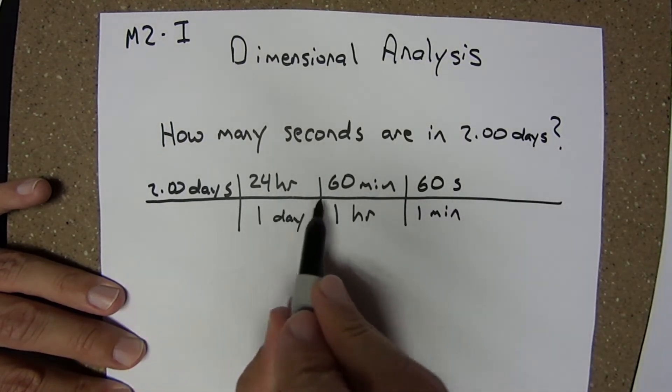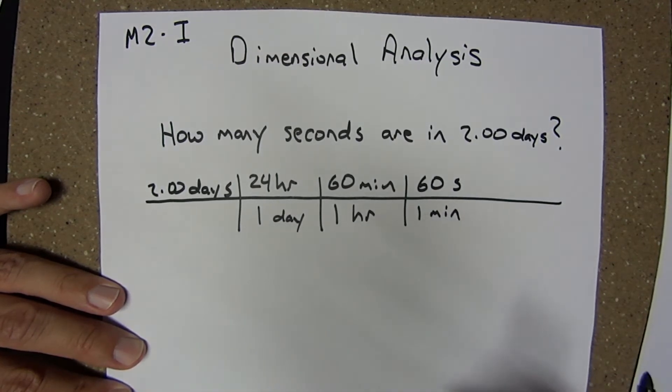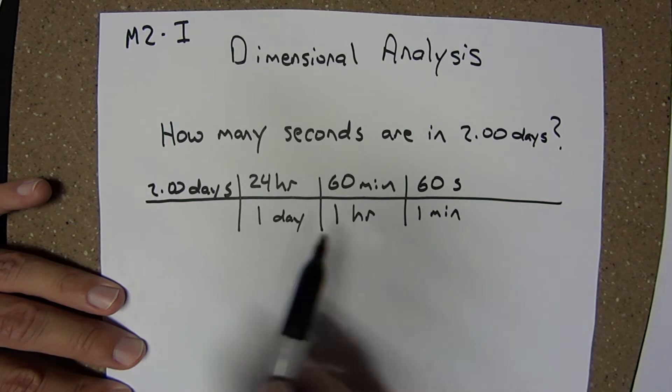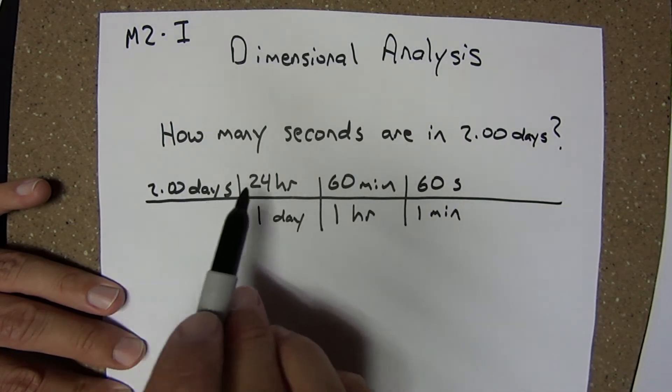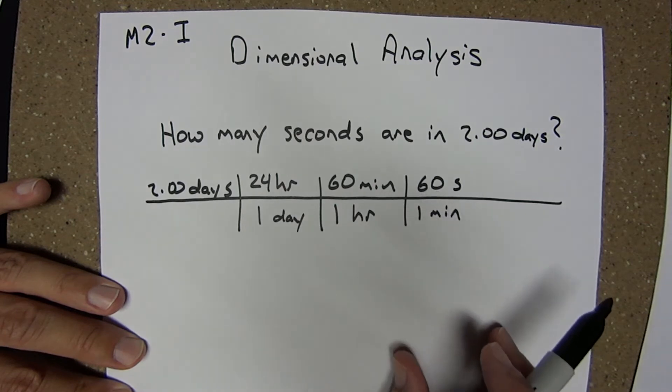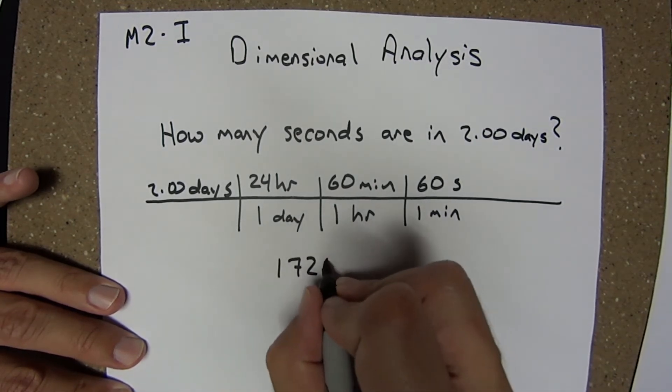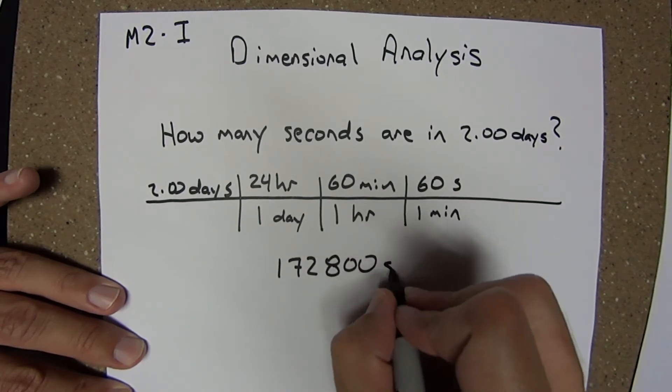Anything that is above this horizontal line, I'm going to multiply by. Anything below, I'm going to divide by. So here I'm taking 2.00 times 24 times 60 times 60. I do that arithmetic and I get 172800 seconds.